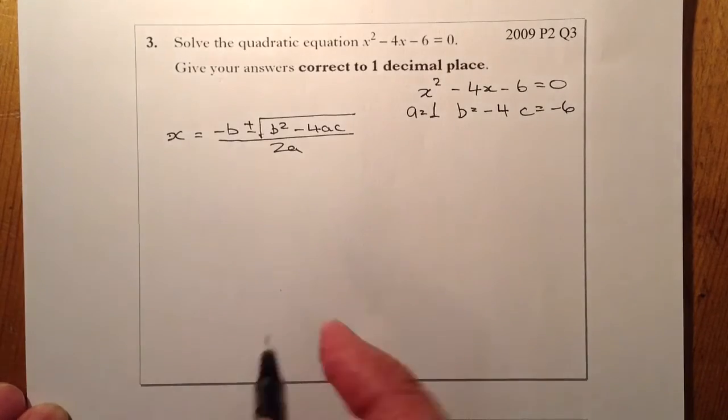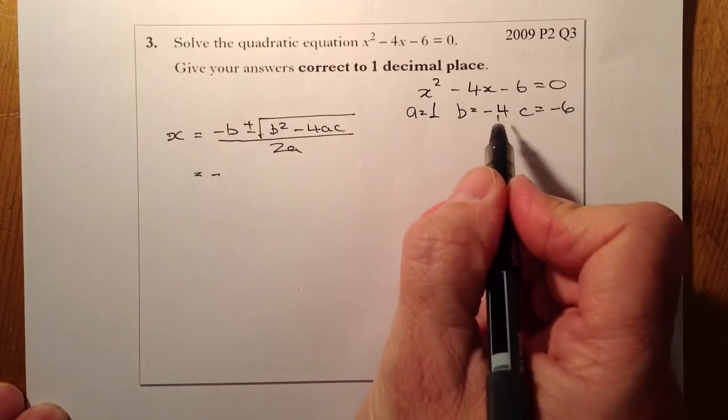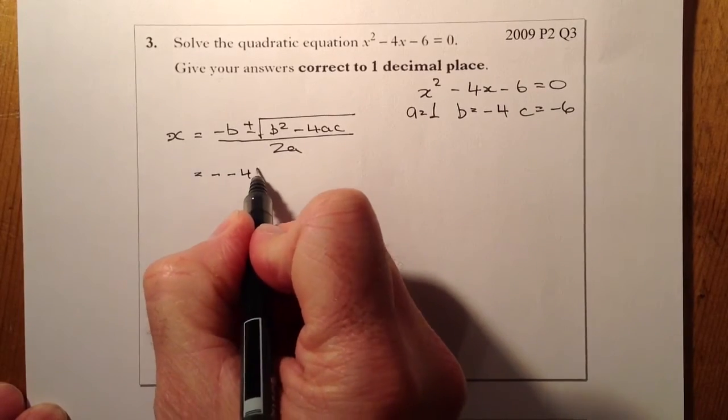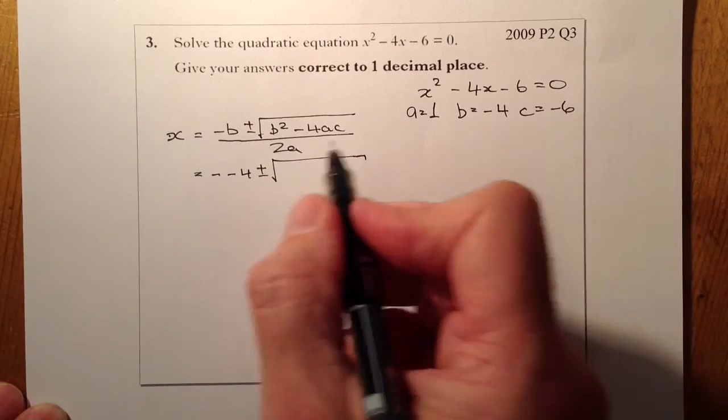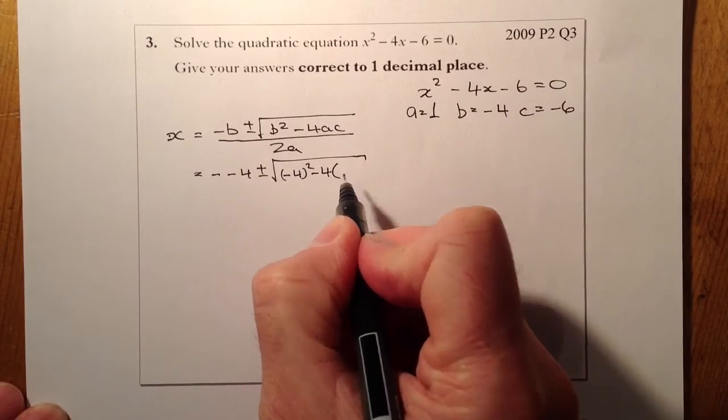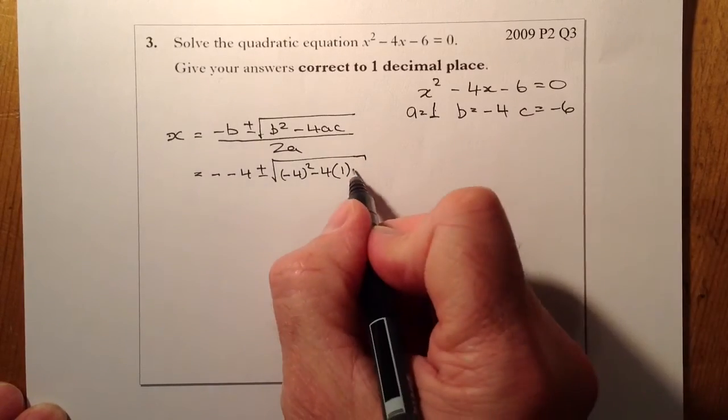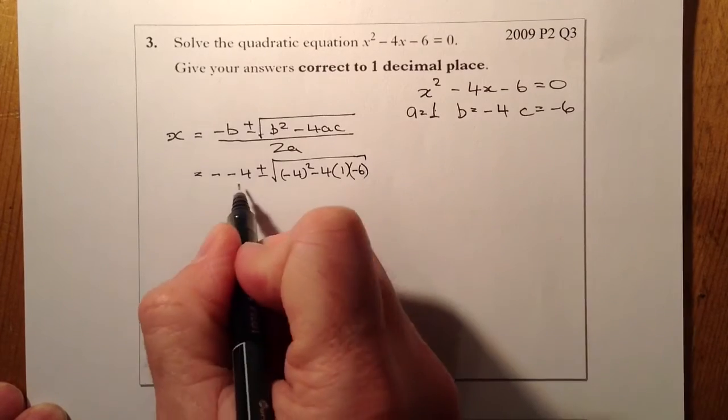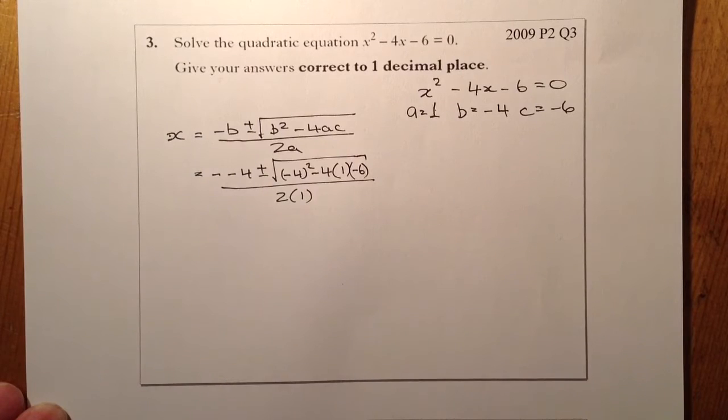So that's a minus b, so minus and that's minus 4, and it's a plus or minus, and b squared which is minus 4 and I'll just put that in a wee bracket squared, minus 4 times a which is 1 times c which is minus 6, that's all divided by 2 times a which is 1.